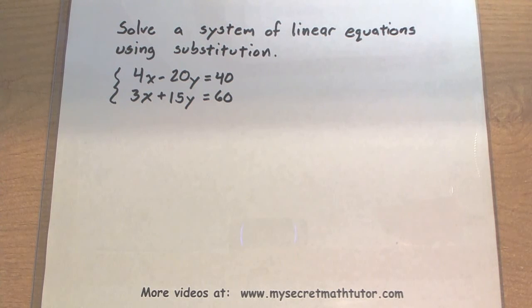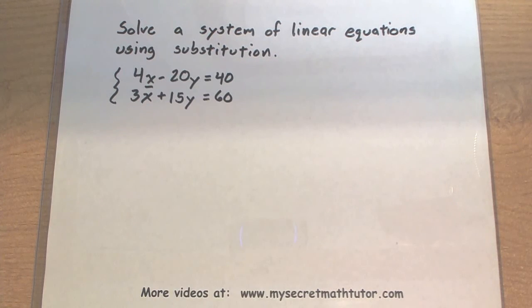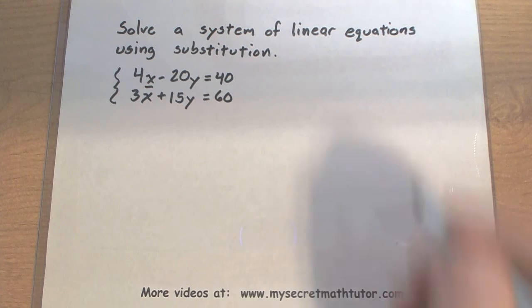The way this method works is we're going to solve for one of the variables and substitute it into the other equation. I'm going to take this x here. I'm actually going to try and solve for x in the first equation.